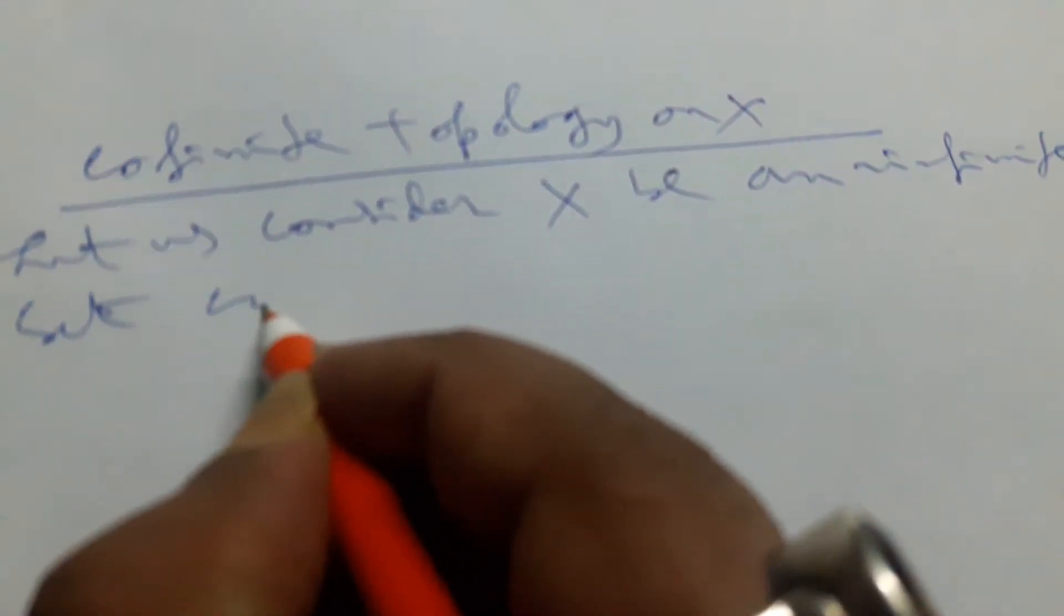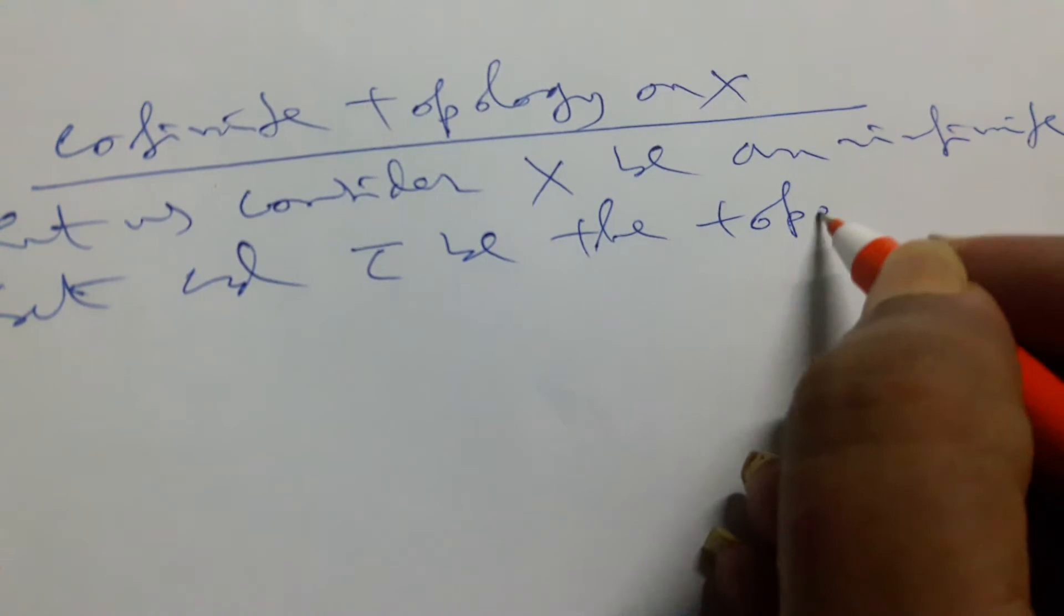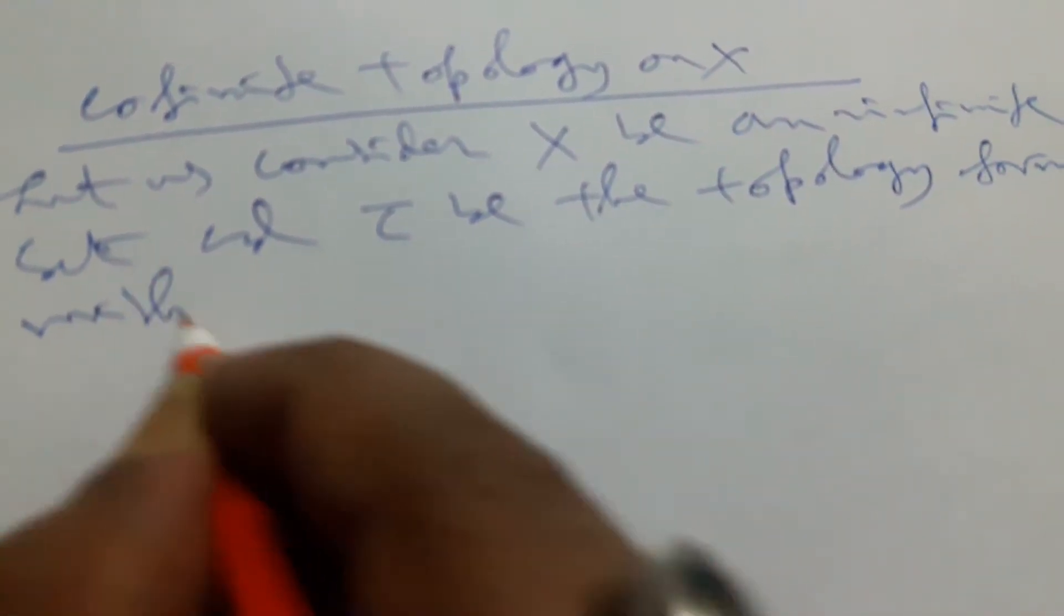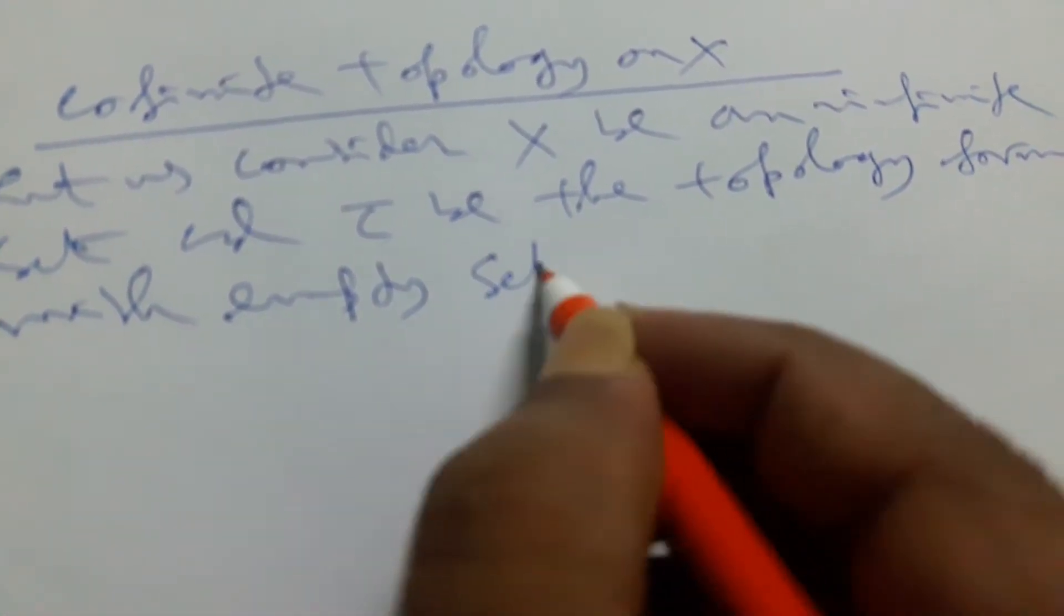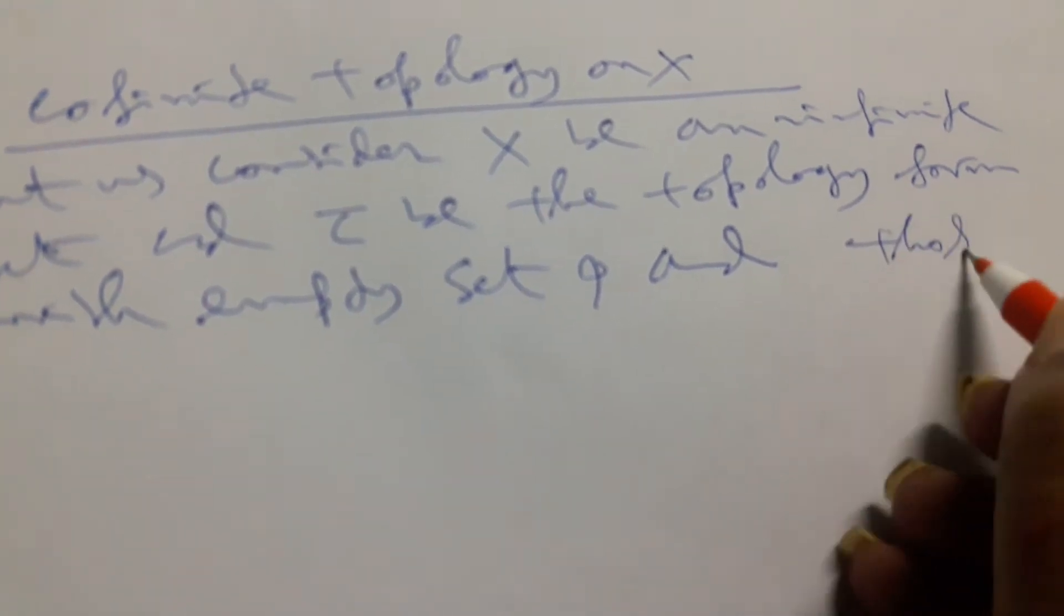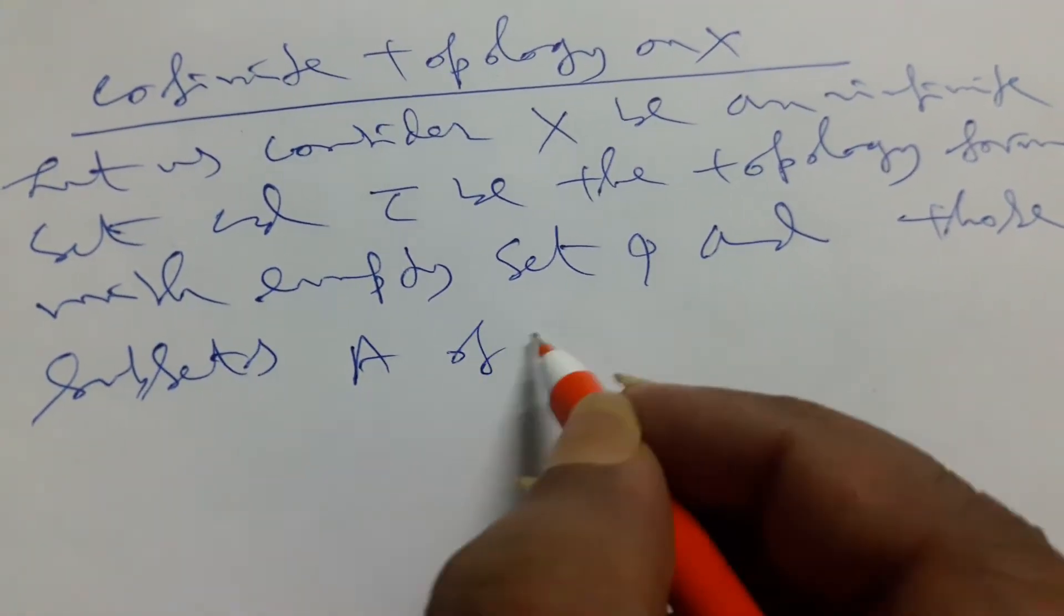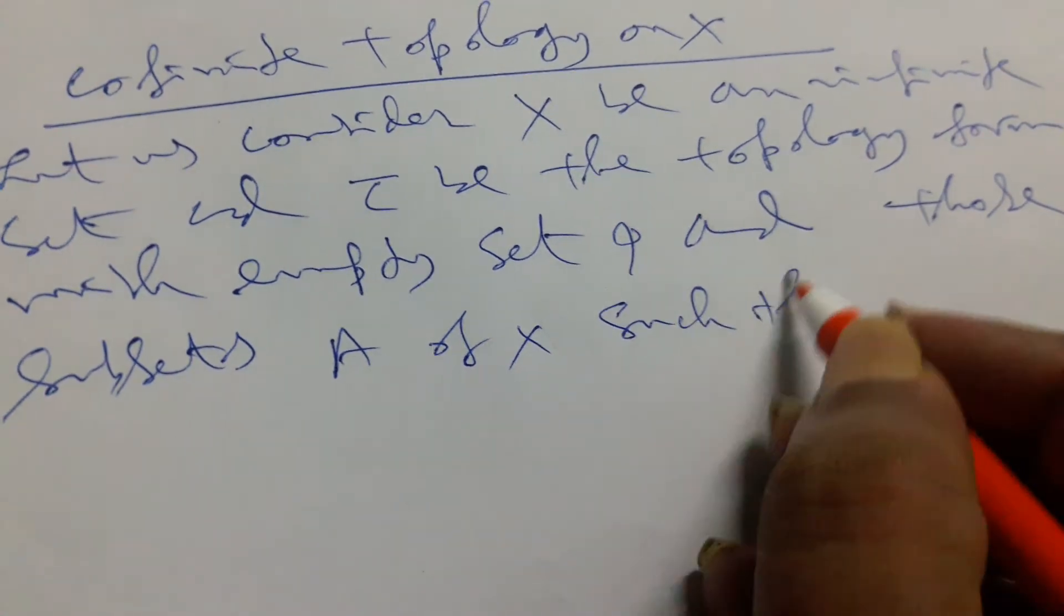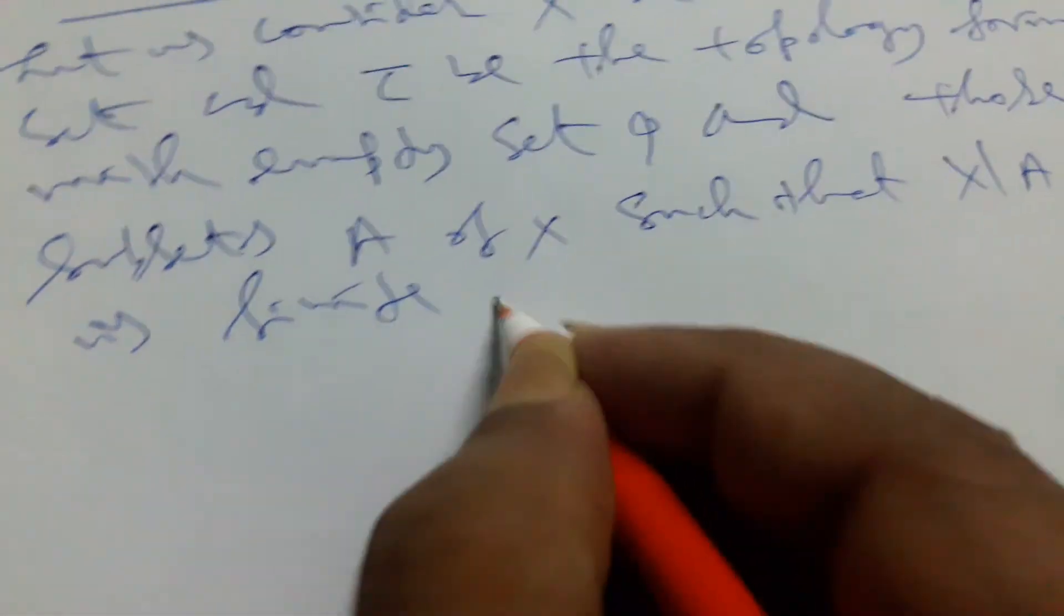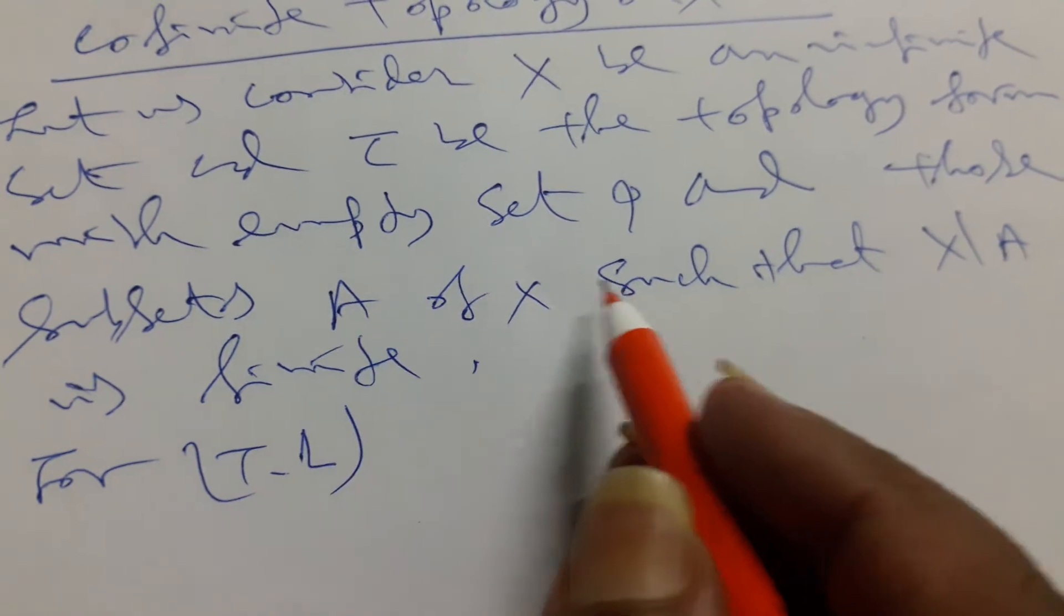And let τ be the topology formed with empty set φ and those subsets A of X such that X minus A is finite. For T1, those subsets A of X means φ and X belong to τ.